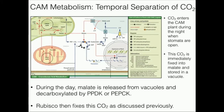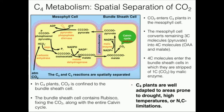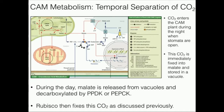During the night, when the carbon dioxide comes in, that CO2 is immediately going to be fixed into malate — the same four-carbon molecule we saw in C4 plants. The CO2 is going to be fixed into malate, and it's actually going to be stored in a vacuole. We're not going to do anything with it during the night.